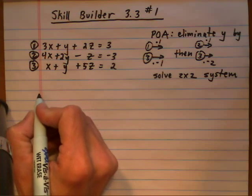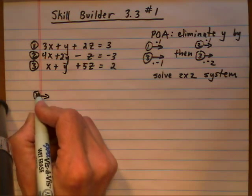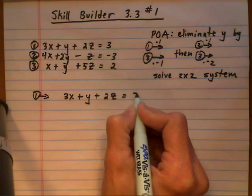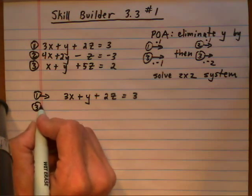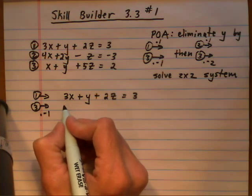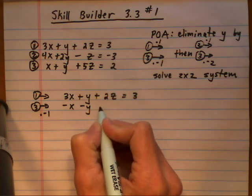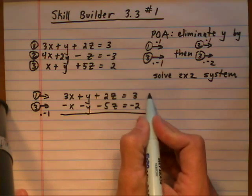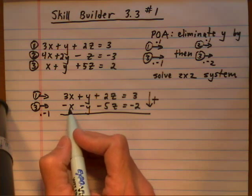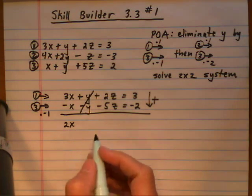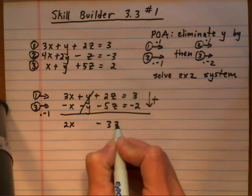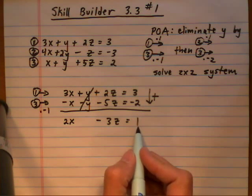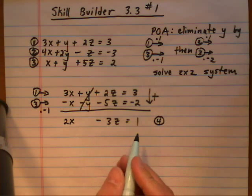Let's go ahead and execute the plan. We take equation 1 as is: 3x + y + 2z = 3. Then we take equation 3 and multiply by negative 1, so everything changes sign: −x − y − 3z = −2. We add those equations — the y terms are gone — and we get 2x − 3z = 1. We'll call this equation 4 and set it aside for now.